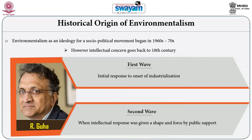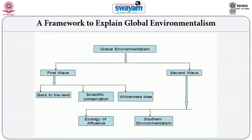Let us understand the global spread of environmentalism using Guha's framework of first and second waves. Guha divided the first wave into three strands: back to the land, scientific conservation, and wilderness ideas. He divided the second wave into two strands: the ecology of affluence, and the southern challenge. The basic difference is that the first wave responded to the onslaught of the industrial revolution, while the second wave is of recent origin, emerging with large-scale global political protest and struggles against environmental degradation.